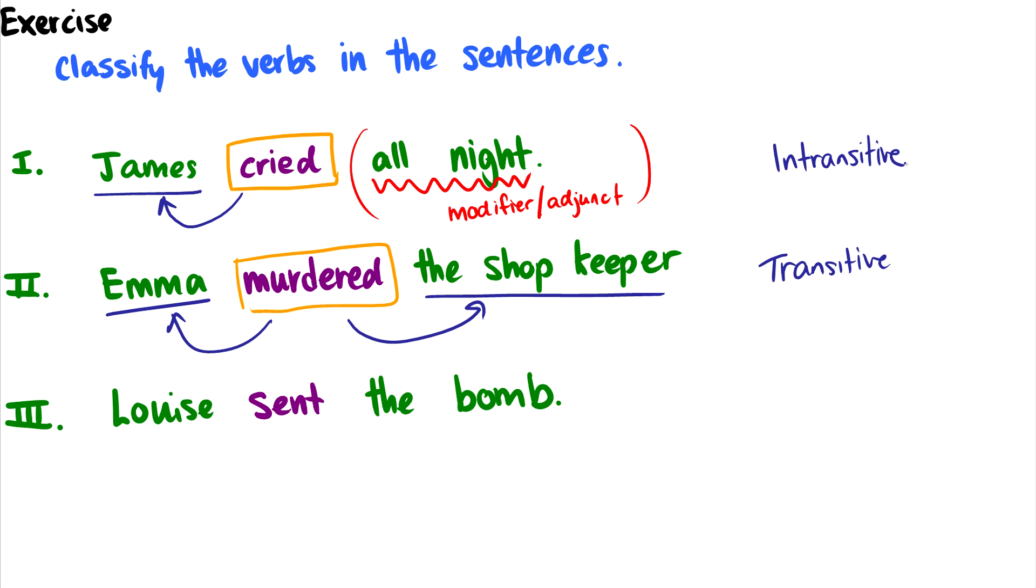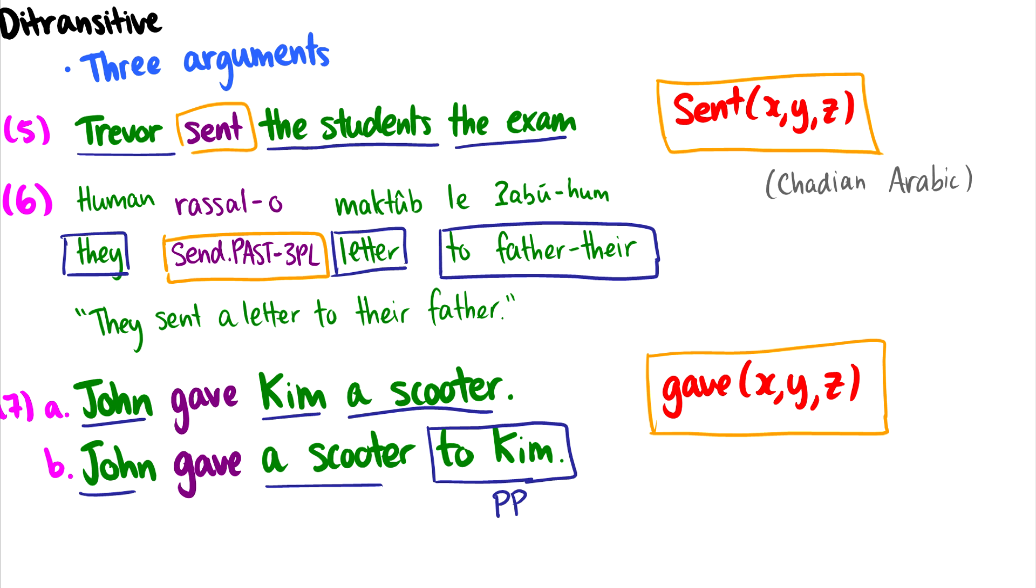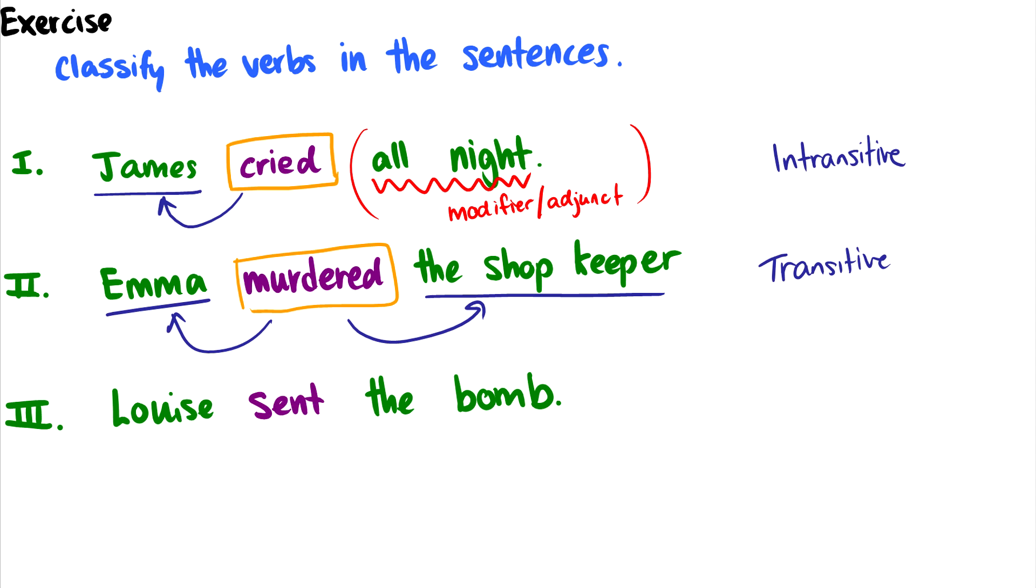What about 'Louise sent the bomb'? So in the previous slide, we saw 'sent' as a ditransitive verb for 'Trevor sent students the exam.' But in this case, 'sent' - well, there is a sender, which is Louise, and there's something being sent, which is the bomb. But there's no third argument that says to who. So in this case, 'sent' is transitive.